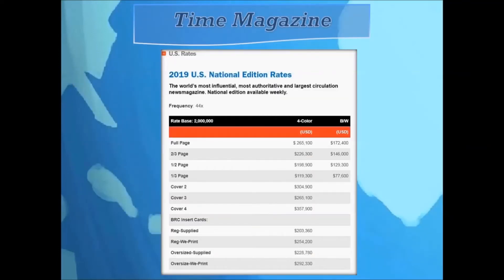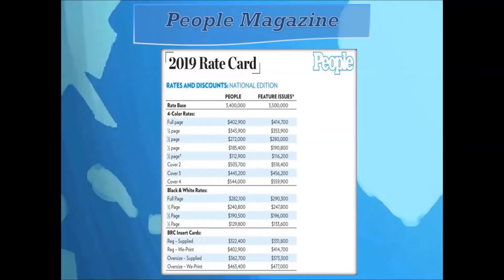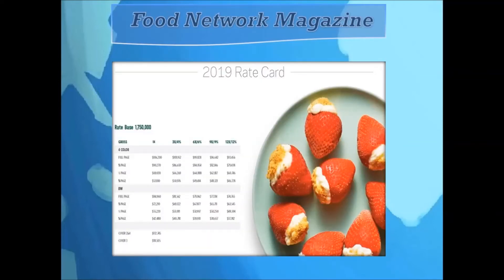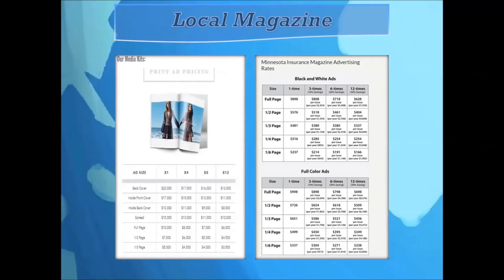A full page ad in Time magazine costs $265,100 per issue. People magazine costs $402,900 per issue. Food Network magazine costs $106,200 per issue. Looking at local magazines, the Locale magazine in Southern California runs $10,000 per issue for a full page ad, while the Minnesota Insurance Magazine runs at an even lower $898 per issue for a full page ad.